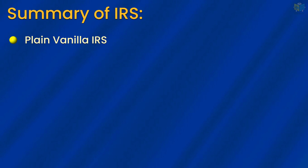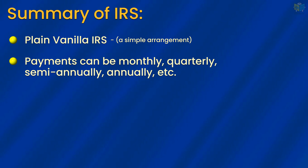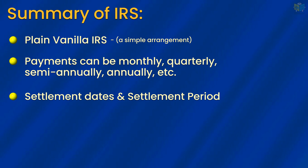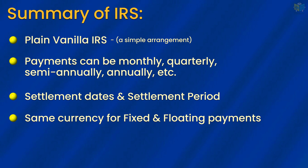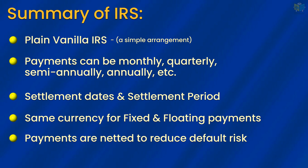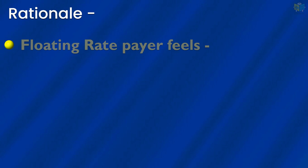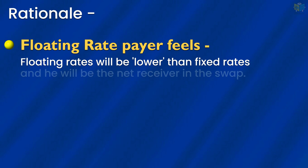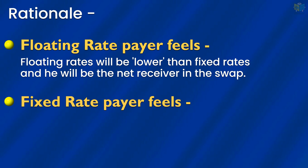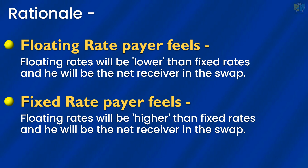This is a plain vanilla interest rate swap. As swaps are customized contracts, payments can be made monthly, quarterly, annually, or at any interval determined by the parties. The payment dates are known as settlement dates, and the time between them is the settlement period. As the same currency is used in both fixed and floating cash flows, the payments can be netted. The transactions are netted on settlement to reduce default risk, but some risk will always remain in OTC agreements. The floating rate payer believes that floating rates will fall and will be lower than fixed rates. The fixed rate payer believes that floating rates will increase and will be more than the fixed rates.